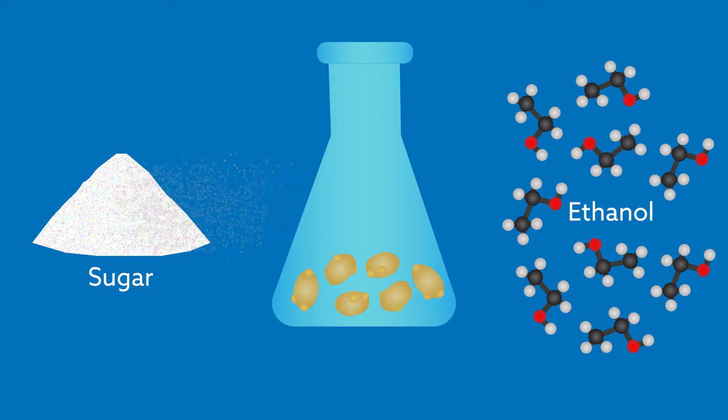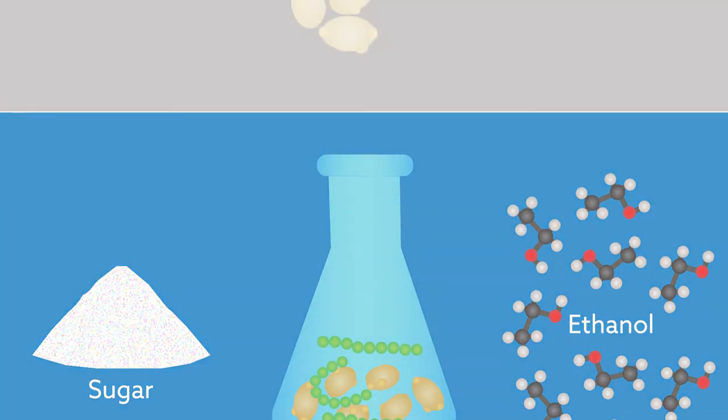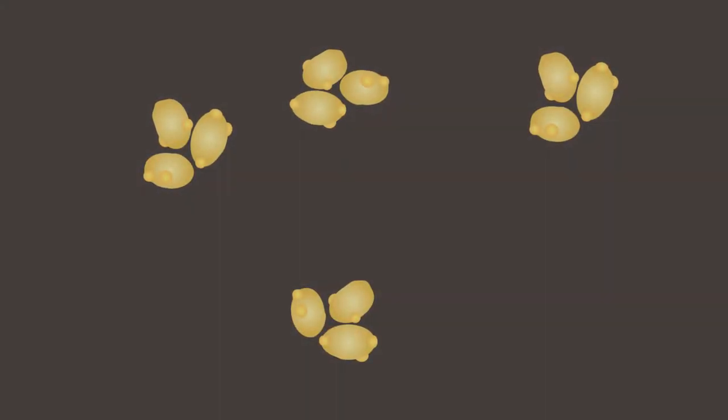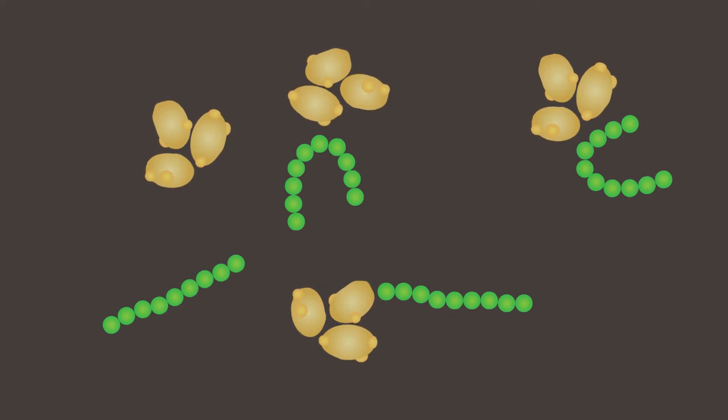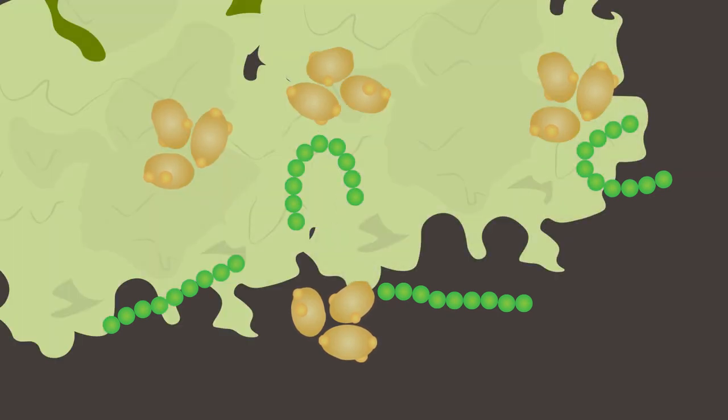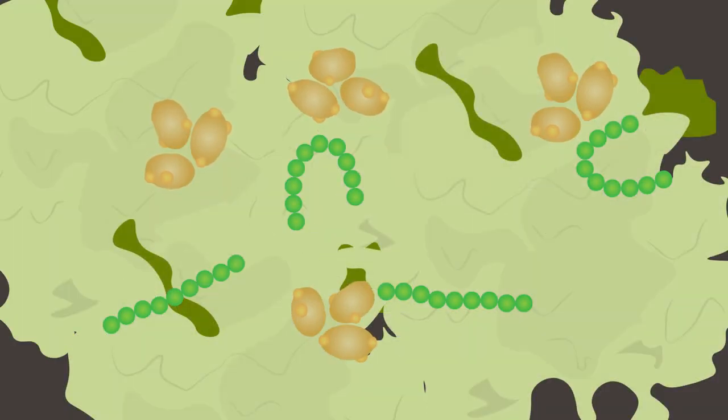So how can researchers slash the price of adding carbon to make biofuels? By outsourcing to an equally industrious business partner. Yeasts and other fungi, it turns out, interact favorably with certain photosynthetic bacteria. In fact, many lichens, the often leafy growths found on trees and rocks, include cohabitating bacteria and fungi.